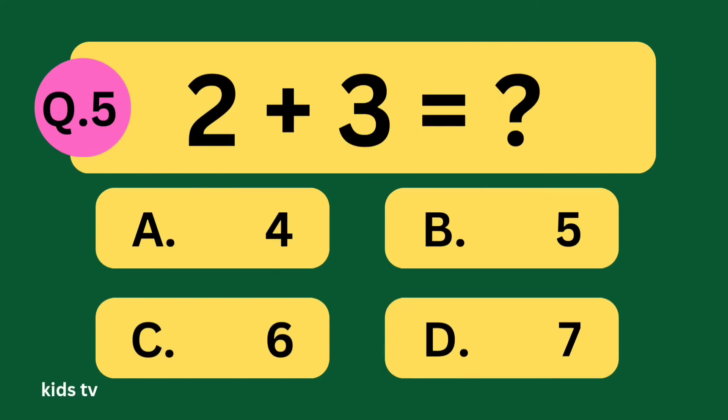2 plus 3 equal what? A: 4, B: 5, C: 6, D: 7.